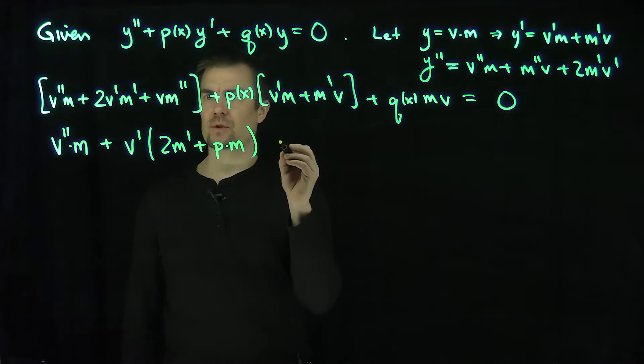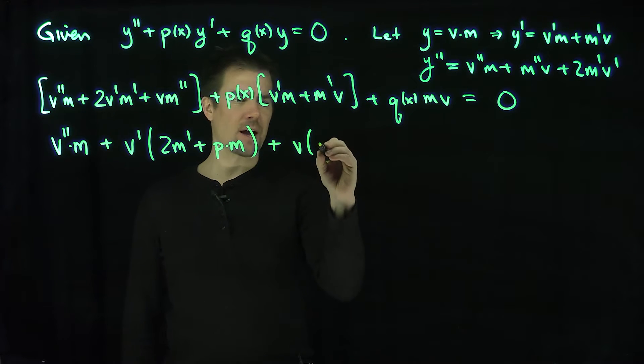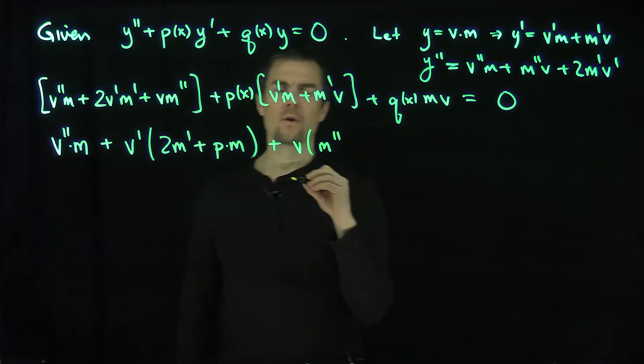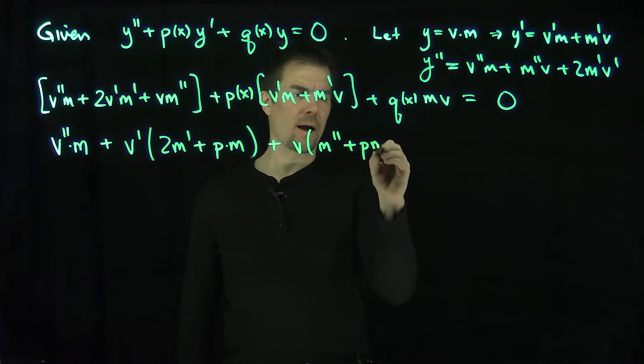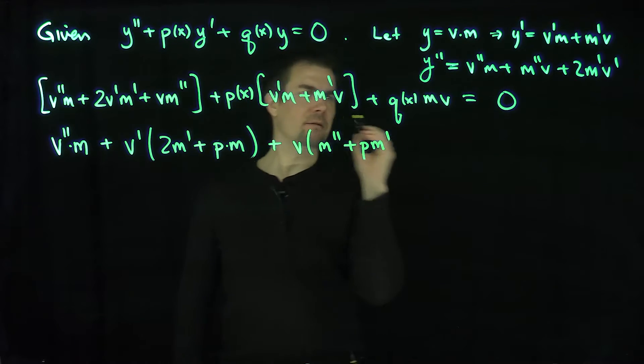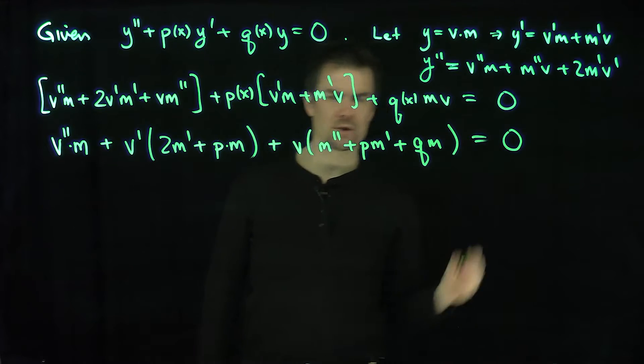And then we have the v terms over here. What v terms do we have? We have v times m double prime, we have v times p m prime, and we have v times q times m equals 0. So I just rearranged the equation over here.